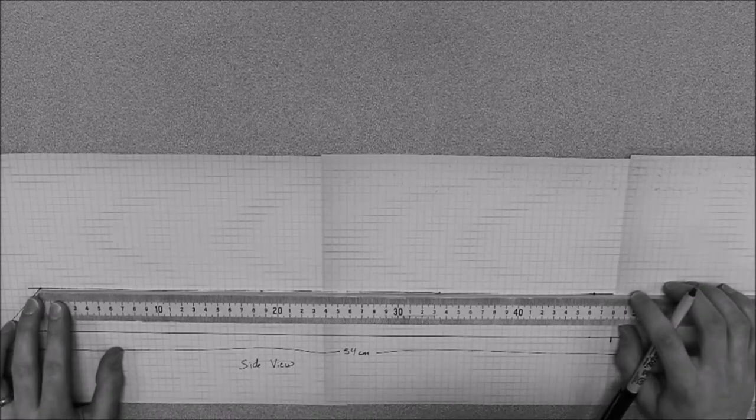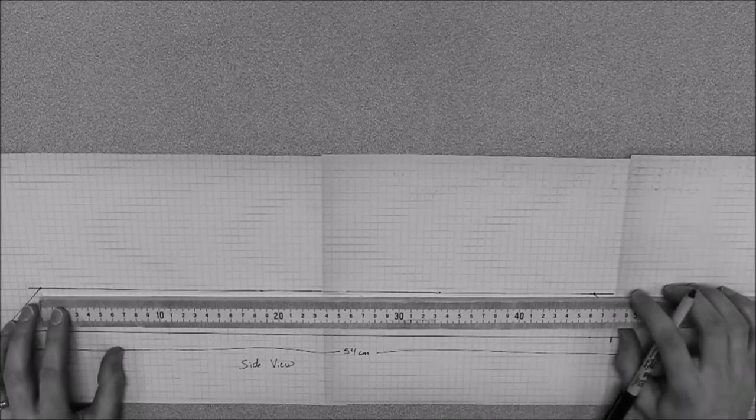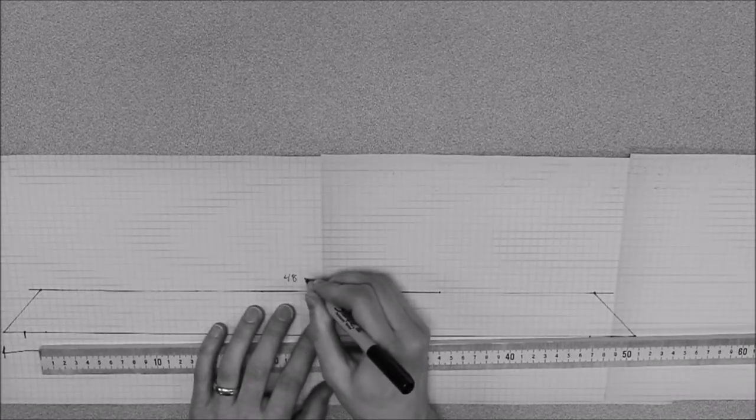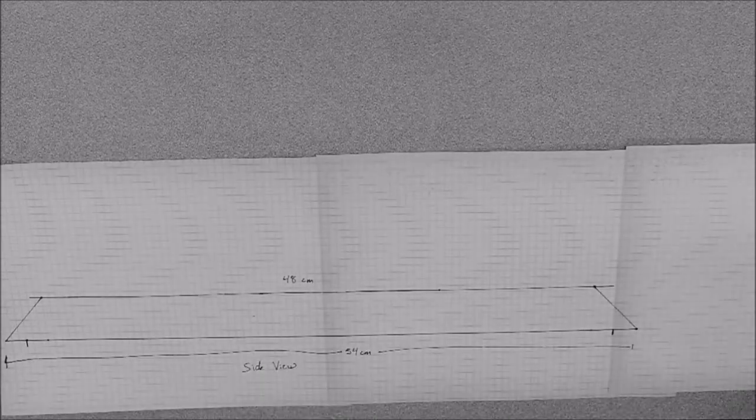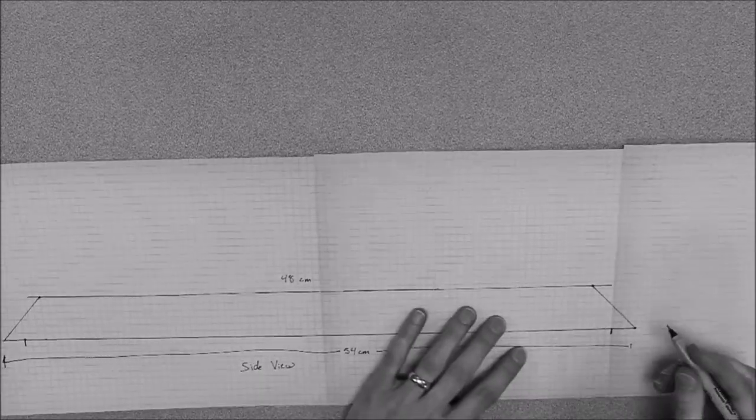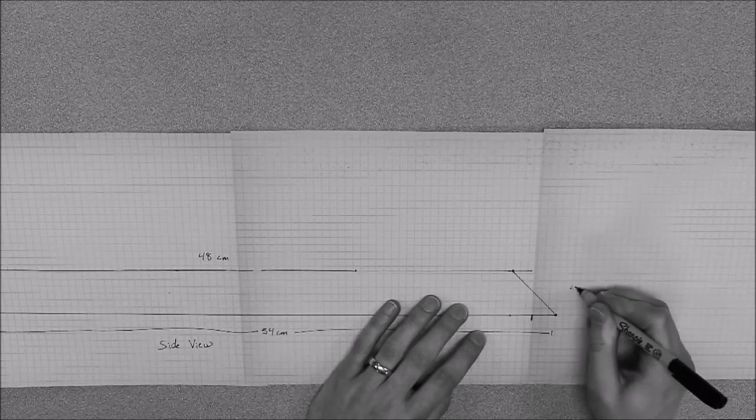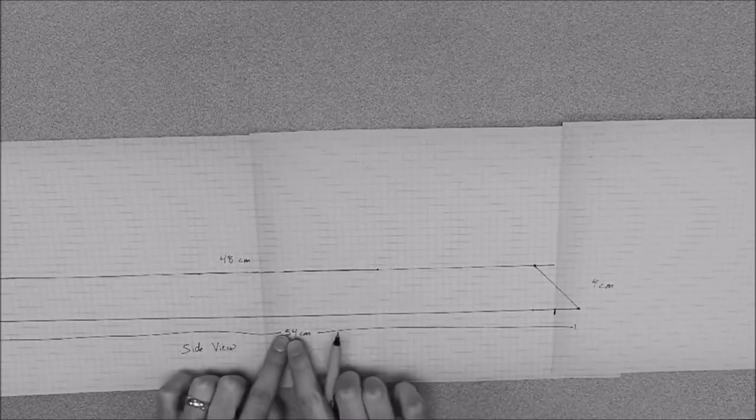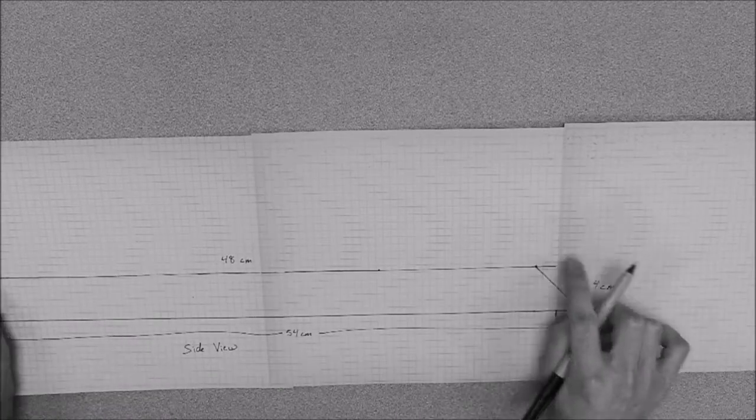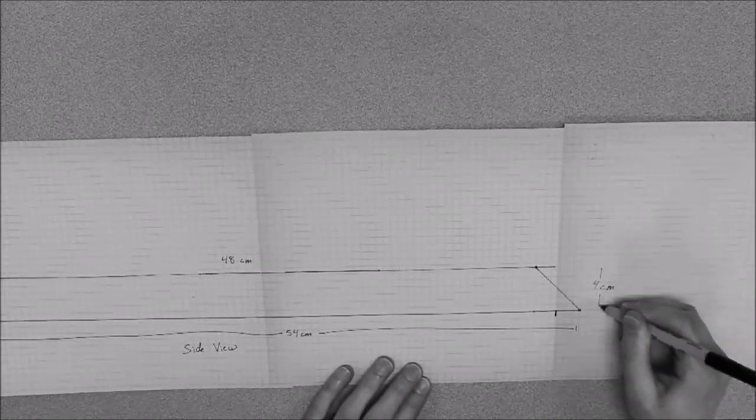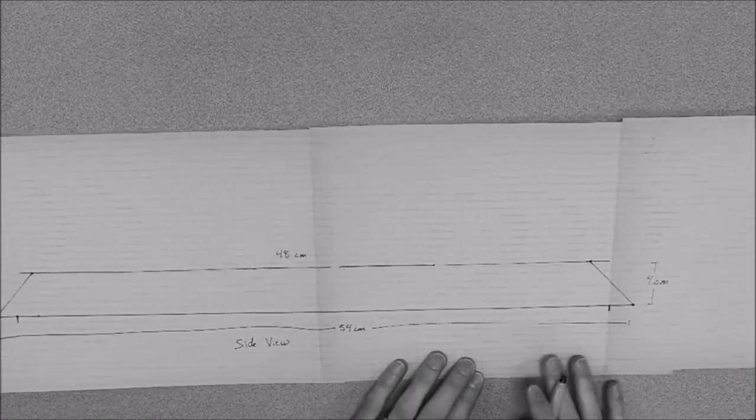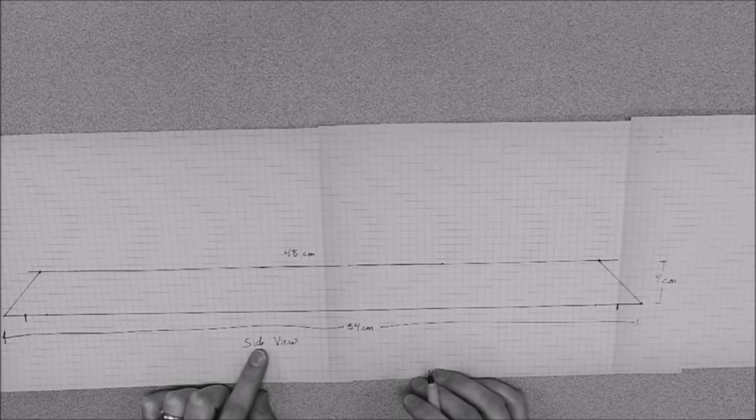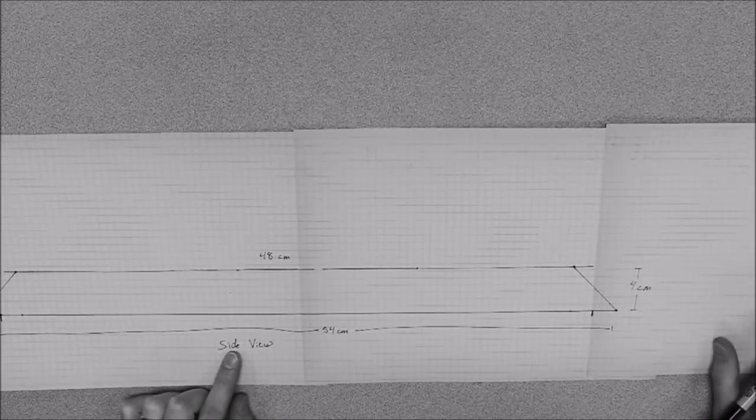So it's actually exactly 48 centimeters. 48 centimeters on top. And then I already know that height wise it is 4 centimeters. So now I know the bottom length, the top length, and the height of my bridge.